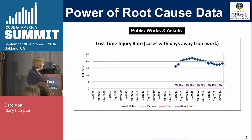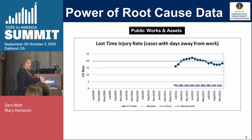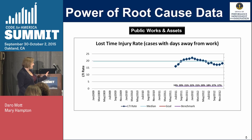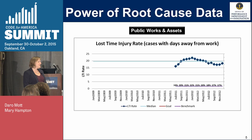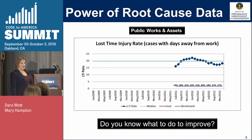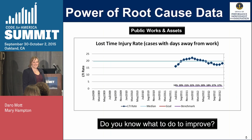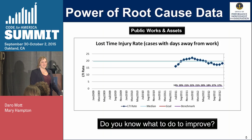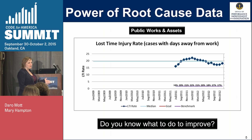We're going to start with an example where we used root cause data and different methods of collecting it to make improvement in performance. The Public Works and Assets Department was looking at their lost time injury rates — how many times employees were getting injured and being out of work. Their rate was hovering around 15 to 20 percent during 2011 and 2012. The Bureau of Labor Statistics says local government should be around 2 percent — so 15 to 20 is a lot higher.